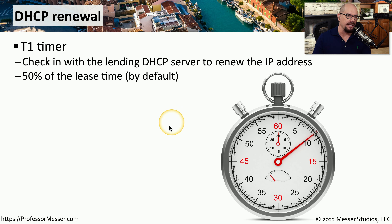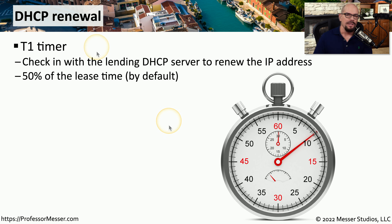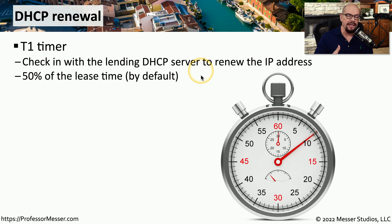One is called the T1 timer. This checks in with the DHCP server halfway through the lease time. So if your lease time was eight days, this T1 timer — which is 50% of the lease time by default — will check in after four days and let the DHCP server know that we would like to keep this IP address for another lease duration. At that point, the timer resets to eight days and we start counting down again.